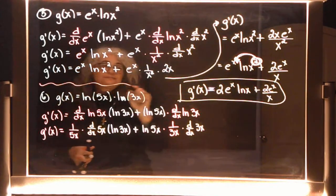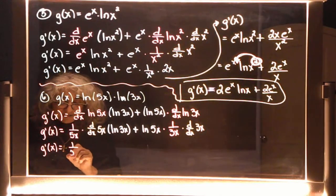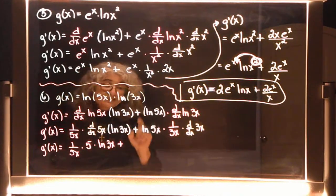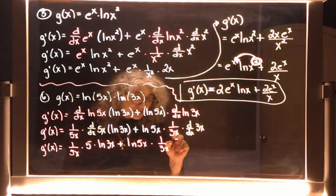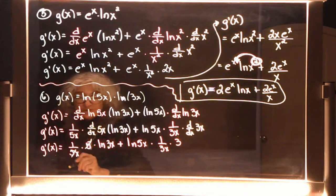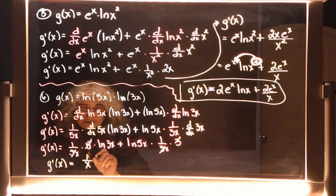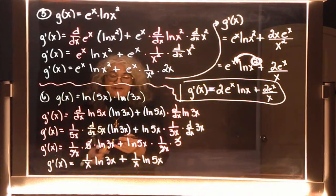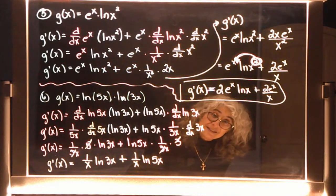This is 1 over 5x times 5, times ln(3x), plus ln(5x) times 1 over 3x times 3. The 5s cancel and the 3s cancel, so the derivative simplifies to 1 over x times ln(3x) plus 1 over x times ln(5x). There's nothing to add together, so that's it.